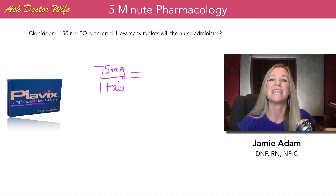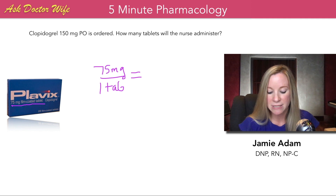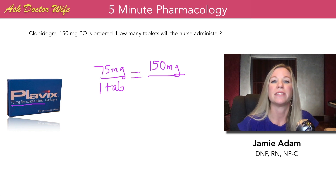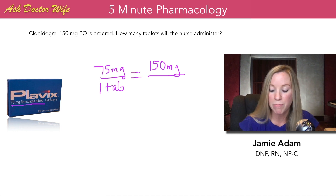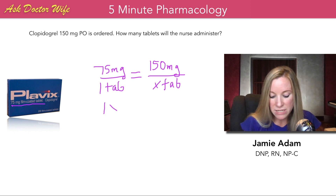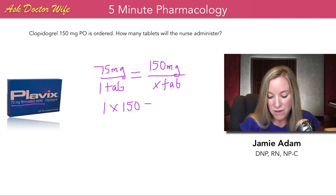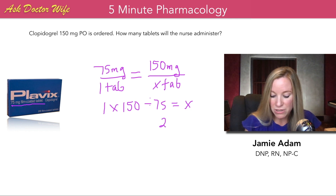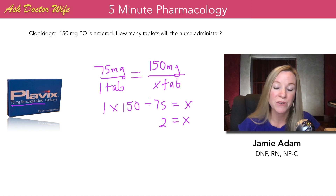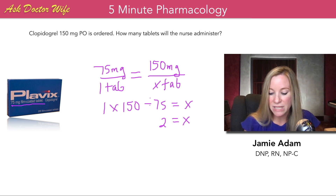If we're trying to figure out how many tablets the nurse will administer, our dose is 150 milligrams. We put 150 milligrams on top so that milligrams and milligrams are matching, and then X tablets on the bottom. In ratio math, you cross multiply and divide: 1 times 150 divided by 75 gives you X. The answer is 2 tablets. I'd encourage you to use a calculator to check your work.